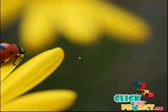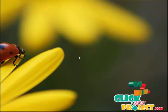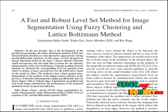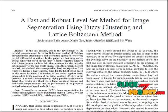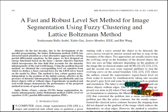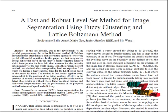Welcome to clickmeproject.com. This project discusses a fast and robust level set method for image segmentation using fuzzy clustering and the Lattice Boltzmann method. In this paper, the Lattice Boltzmann method is used to solve the Level Set Equation. The method is robust against noise, efficient whatever the position or shape of the initial contour, and can detect objects with or without edges.